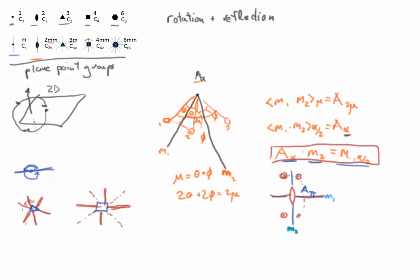There are two different notations. The upper notation is the Hermann-Mauguin notation, used in the international crystallographic tables. In this notation the number denotes the n-fold rotation axis — 1, 2, 3, 4, 6 — and M refers to a mirror plane. 2MM means interleaved mirror planes, whereas 3M means the mirror planes are not interleaved. 4MM and 6MM are both interleaved.